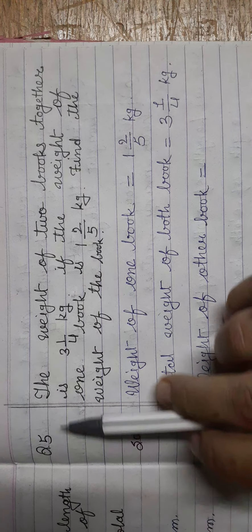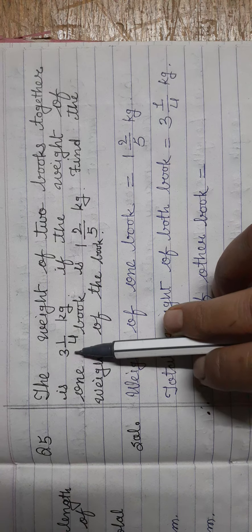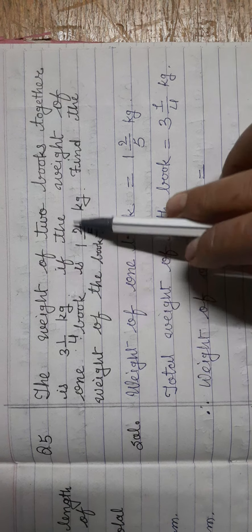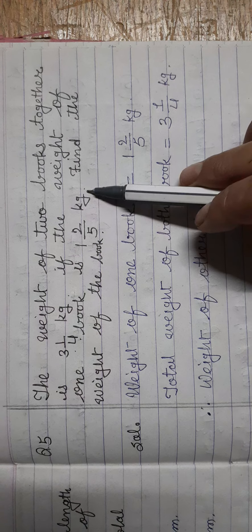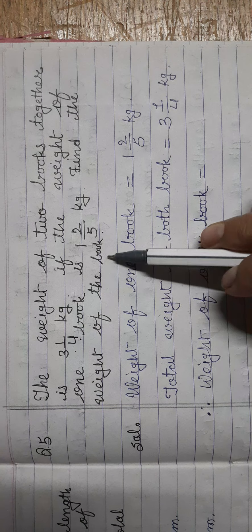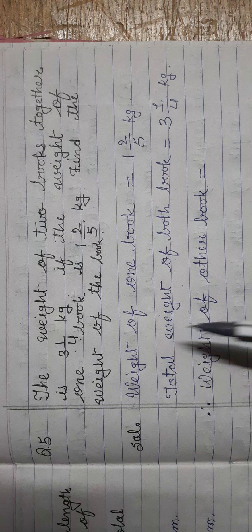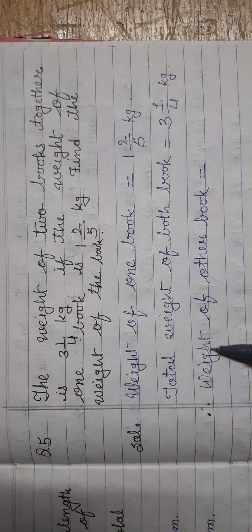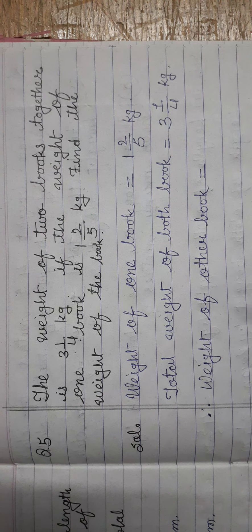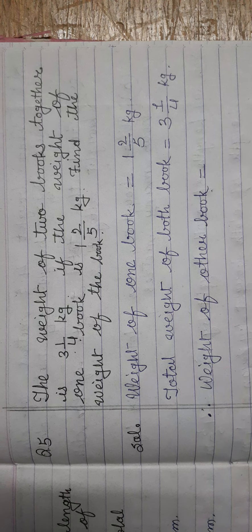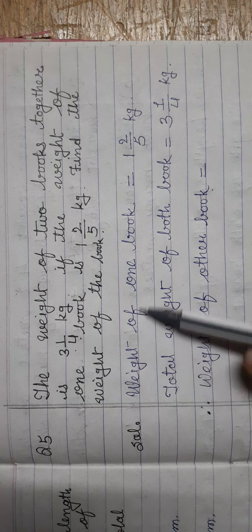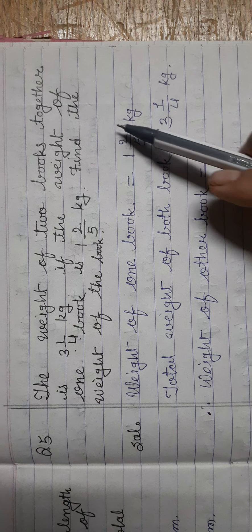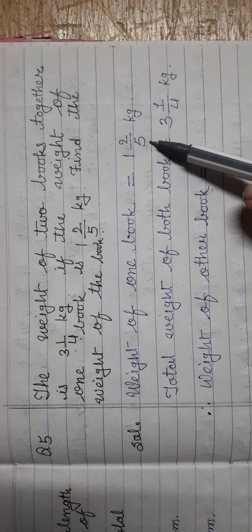77 upon 10 should be written as 7 and 7 upon 10 meter. So the total length of both ribbons is equal to 7 and 7 upon 10 meter. Now question number 5: the weight of two books together is 3 and 1 upon 4 kg; if the weight of one book is 1 and 2 upon 5 kg, find the weight of the other book. To find the weight of the other book, you need to subtract the smaller fraction from the greater fraction. First we write: weight of one book is equal to 1 and 2 upon 5 kg.